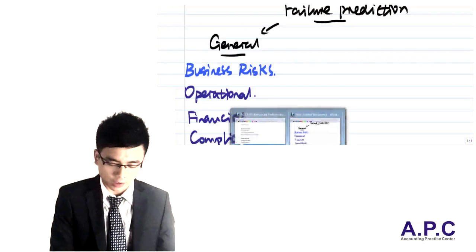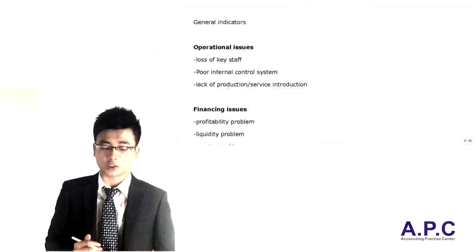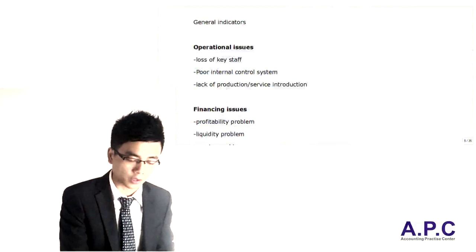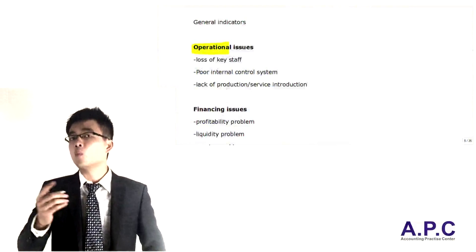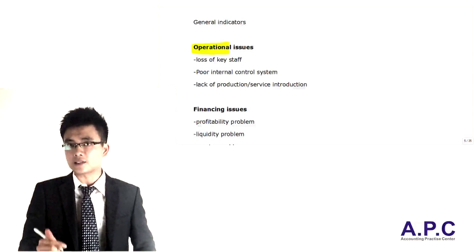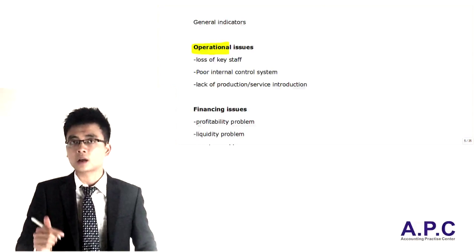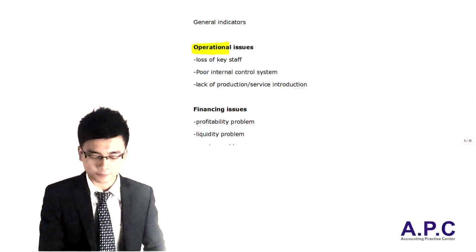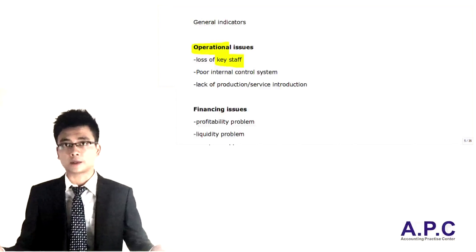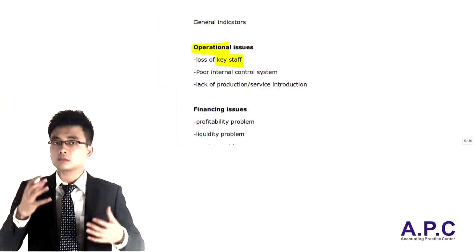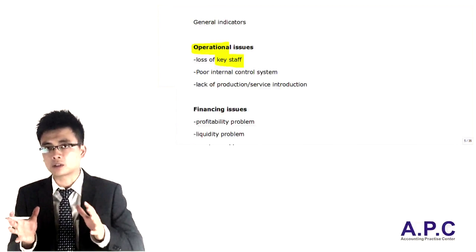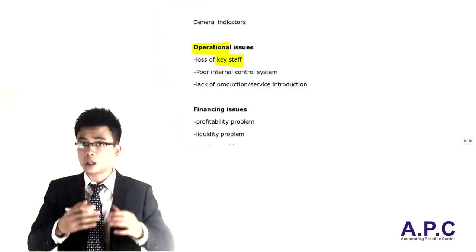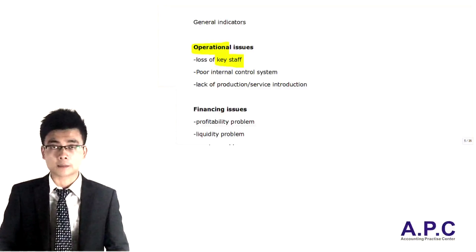If we turn back to your study notes, we can see those three factors. For example, operational issues: what if the key staff within a high-tech industry company has left the company, and hence the research and development process has to be suspended? As a result of that, that would be a big problem for the company.